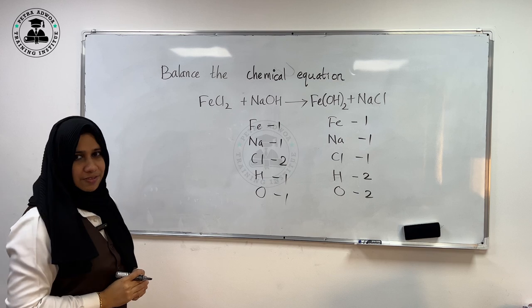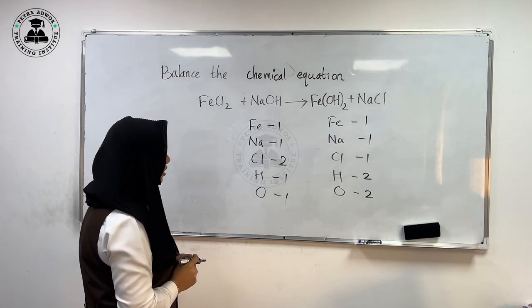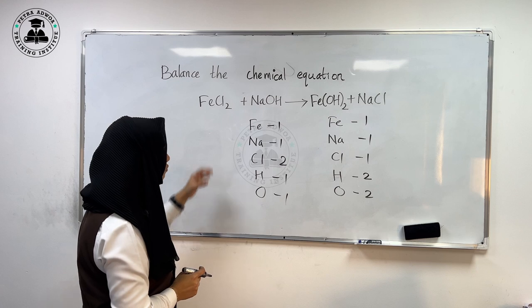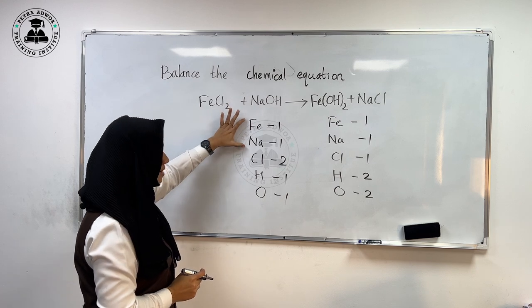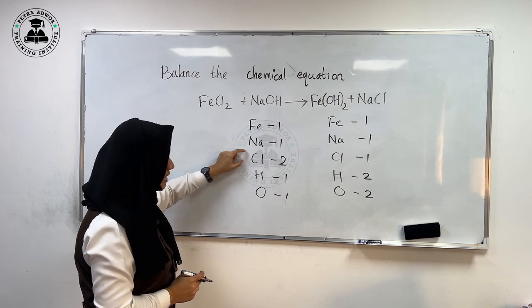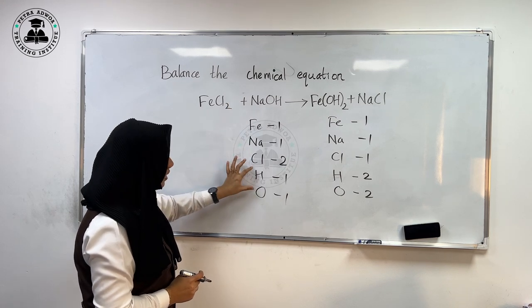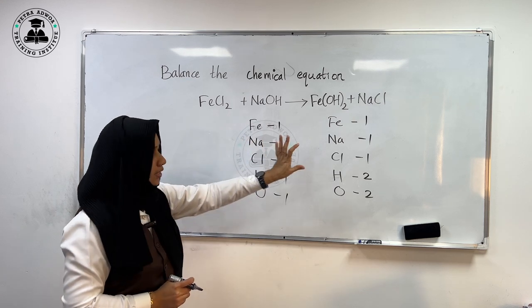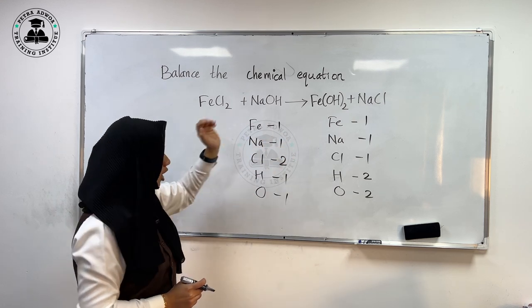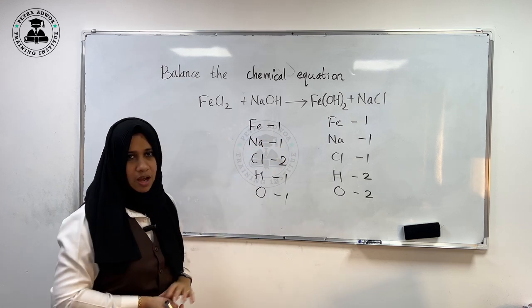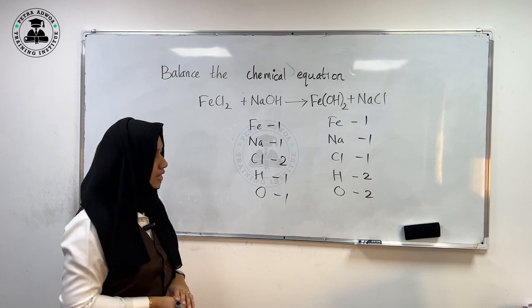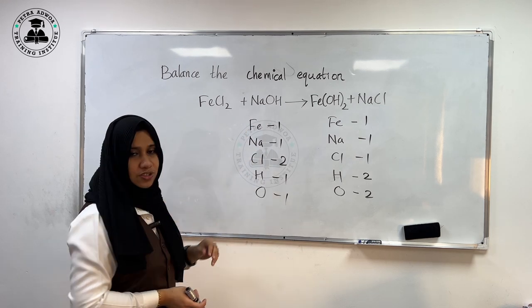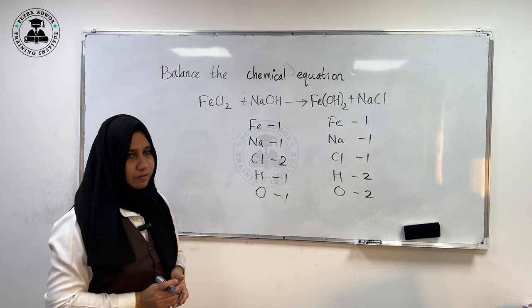Now we have to balance the chemical reaction. Whenever you start balancing, first go for the metals, then for the non-metals other than hydrogen and oxygen, then after completing the other non-metals go for hydrogen, and finally oxygen. If you follow that order, it will be an easy method for you.